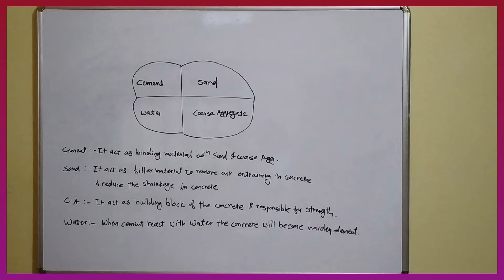When water is poured, cement reacts with water in a chemical reaction which forms cement paste. This cement paste binds the sand and aggregate together. When the cement paste hardens, it becomes a hardened mass — so water's major role is to react with cement and form cement paste, resulting in hardened concrete.